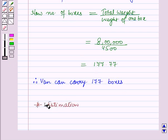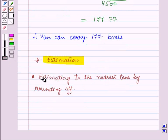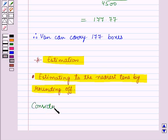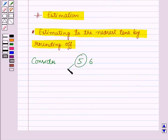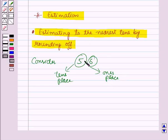Now let us discuss estimation. First we will learn estimating to the nearest tens by rounding off. Consider the number 56 — here 5 is at the tens place and 6 is at the ones place. We have to round off this number to the nearest tens. For this we will consider the digit to the right of the tens place digit, which is the digit at the ones place, that is 6.